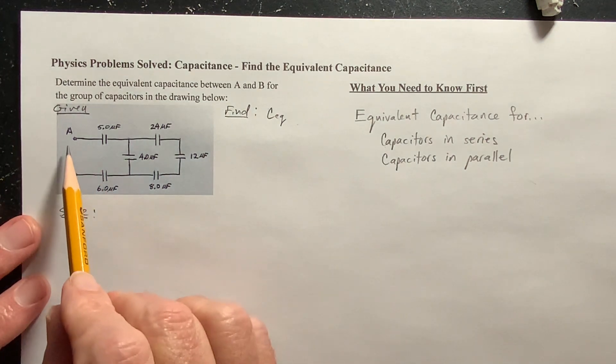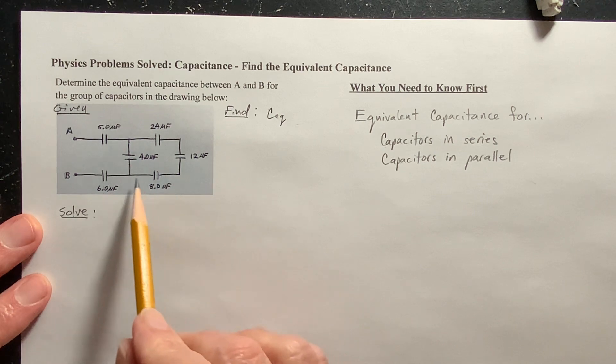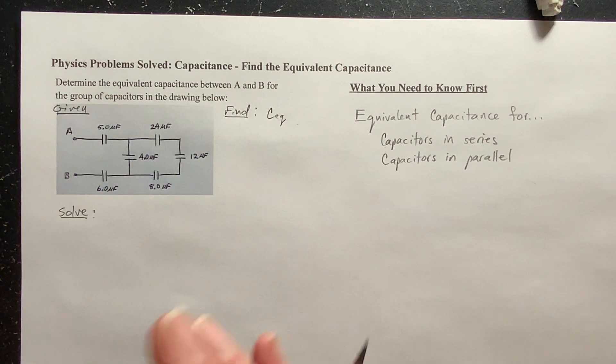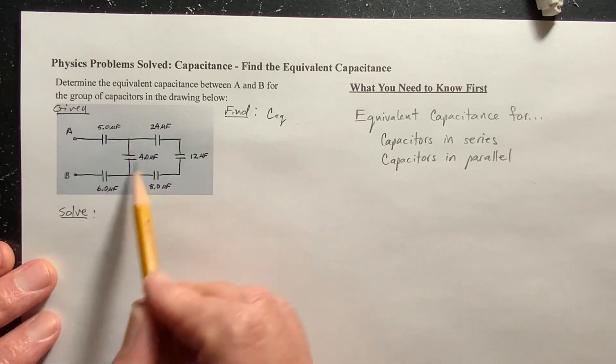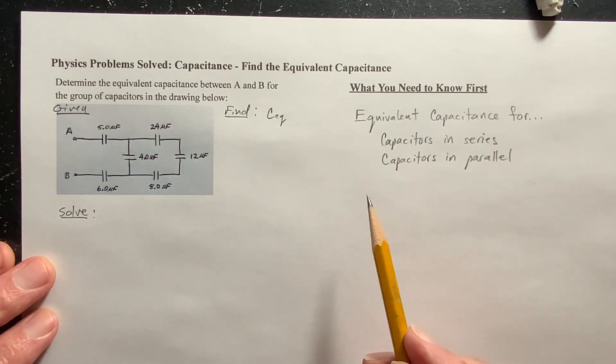So, I'm looking here, is anything in parallel? Well, not directly. I don't see two or more capacitors that are directly in parallel. Parallel means you have the same voltage drop. And all these capacitors have different voltage drops. So, let's look for capacitors in series.